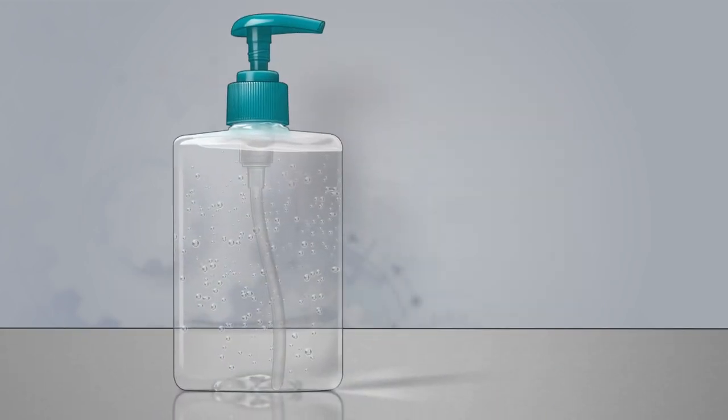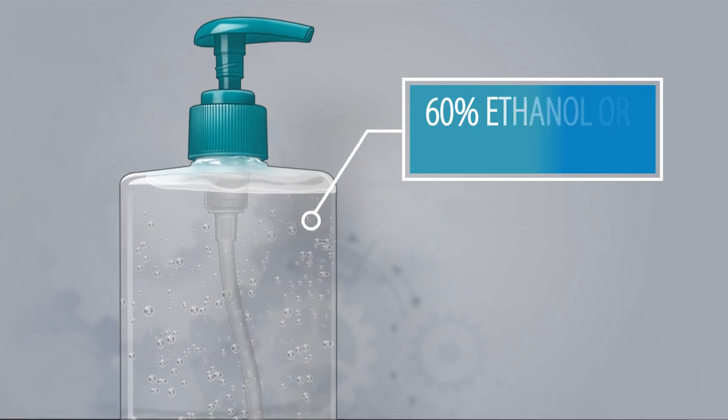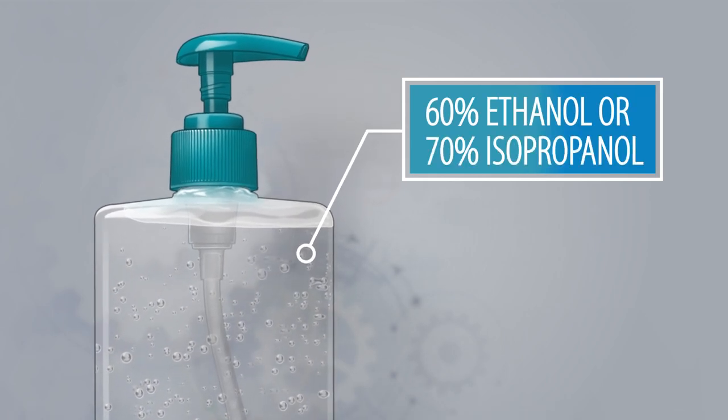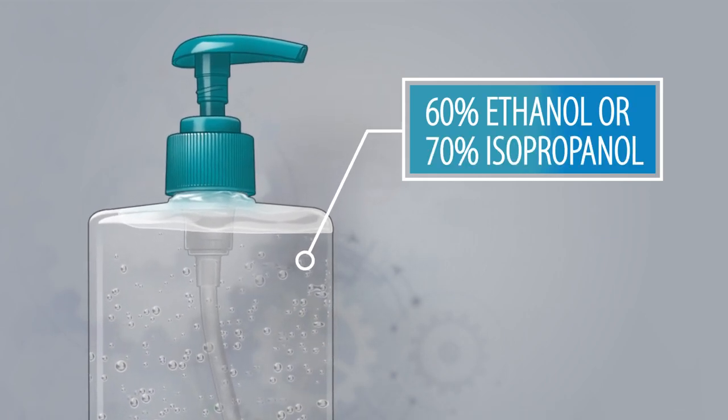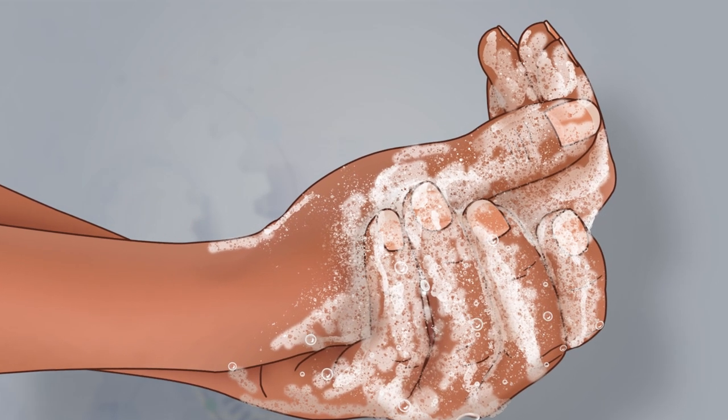Apply alcohol-based hand sanitizer with at least 60% ethanol or 70% isopropanol to your hands. Wash your hands with soap and water or don a new pair of gloves.